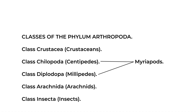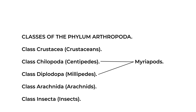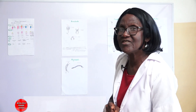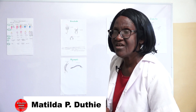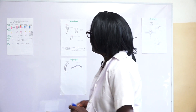The classes of arthropods are: class Crustacea, class Chilopoda, and class Diplopoda. Chilopoda is centipedes and Diplopoda is millipedes, and these two classes are normally grouped together as myriapods. Then we have class Arachnida and class Insecta.